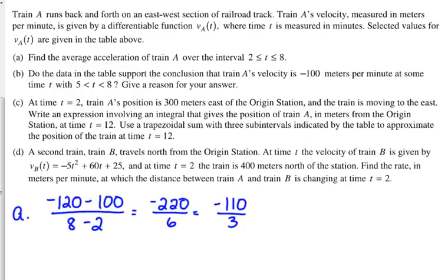It doesn't say include units, but it really can't hurt. So, meters per what? Minutes squared. So, again, it doesn't say include units, and on the rubric, it only gives one point for the average acceleration, but sometimes, and yes, you have to have the negative. Yes, you have to have the negative.